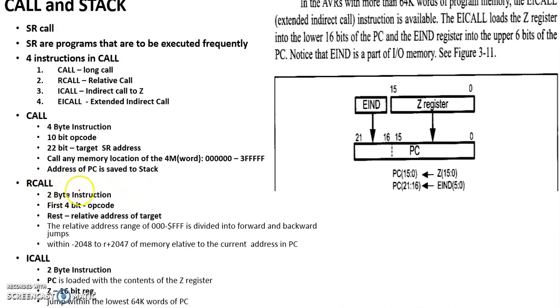Now, RCALL — relative call. It is a 2-byte instruction with a 12-bit offset code, not RCALL but relative call.